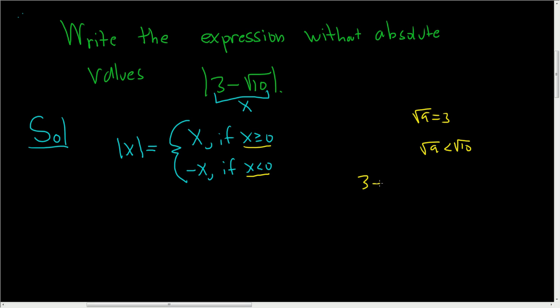So if we take 3 minus the square root of 10, since the square root of 10 is bigger than 3, this is less than 0.